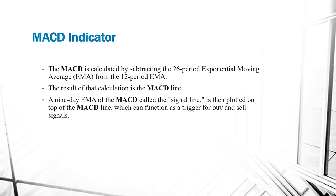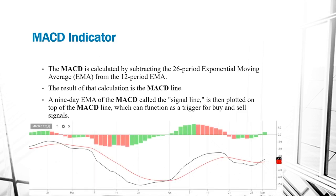The signal line can function as a trigger for buy and sell signals. When we open the MACD indicator in any trading platform, it looks something similar to this. We have the black line, which is the MACD line, the red line, which is the signal line, and the histogram. The histogram shows the distance between the MACD line and the signal line. When the histogram becomes zero, it indicates a crossing of the two lines, which can indicate a buying or selling opportunity.